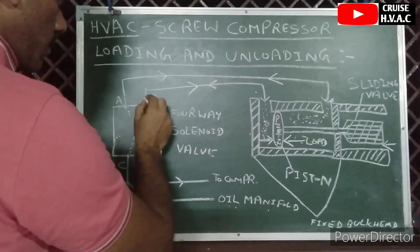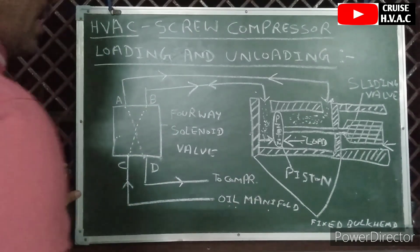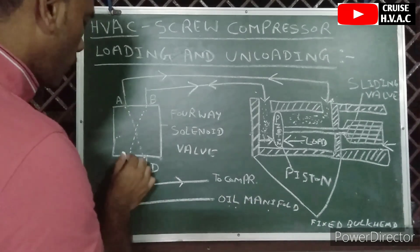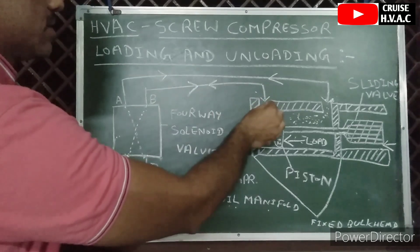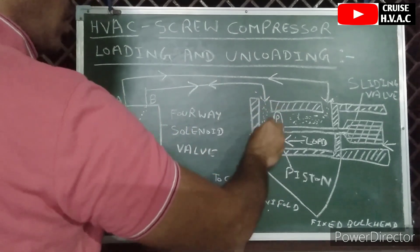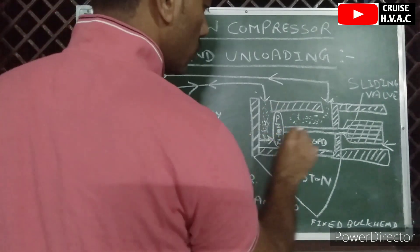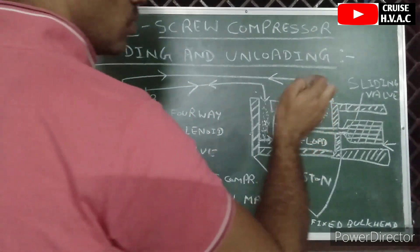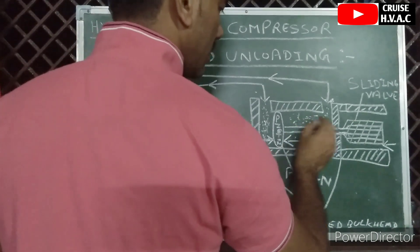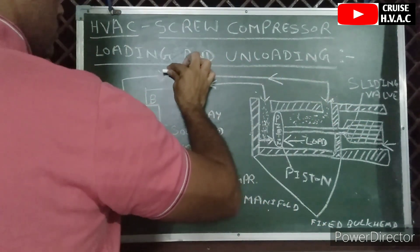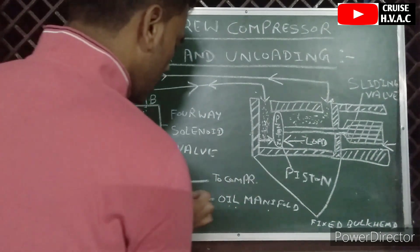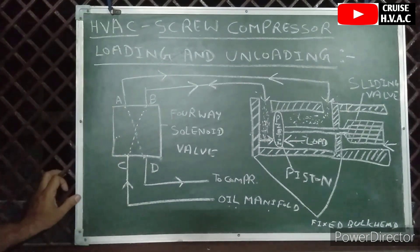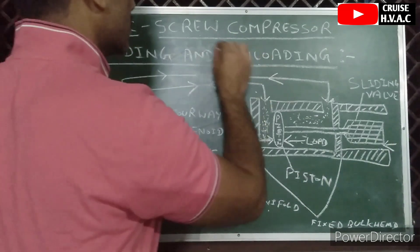When the system is in the unloading condition, the oil comes from the manifold, reaches point C, then goes to point B. From point B it reaches the other side of the piston chamber, the force increases, and it pushes the piston in the opposite direction. When the piston moves that way, the sliding valve also moves in that direction and starts to close, reducing refrigerant flow to the compressor. So that is how the sliding valve moves during loading and unloading in the screw compressor. I hope you guys easily understood this. Thank you so much.